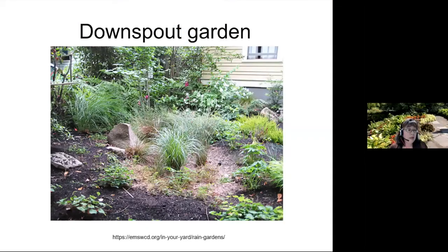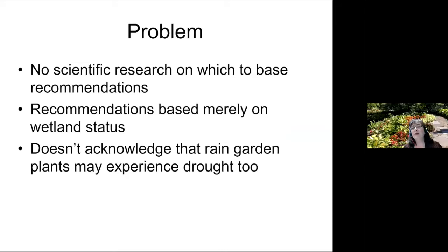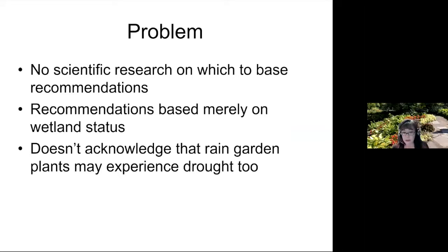We can even have downspout gardens, keeping water in place and allowing it to stay on-site. The problem is that many governmental entities recommend building rain gardens and suggest various plants, but there's no scientific research on which to base those recommendations. The recommendations are based merely on how well plants do in a wetland status, but we really don't have rigorous scientific studies.